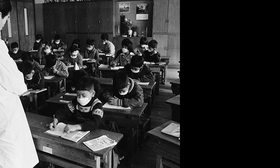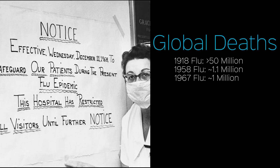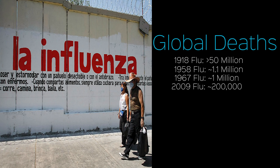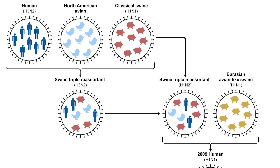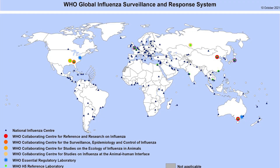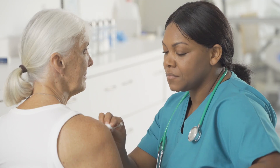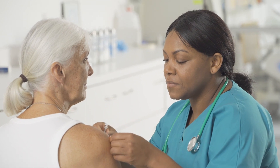Two other flu pandemics occurred during the 1900s, killing an estimated 1 million people each. The most recent flu pandemic took place in 2009 and killed around 200,000 people. These pandemic flu viruses spread easily because they didn't closely resemble the seasonal flu viruses circulating at the time. When it comes to seasonal flu outbreaks nowadays, we have international flu monitoring systems, antiviral medications, and annual flu shots that help to keep the rate of severe disease and death in check.